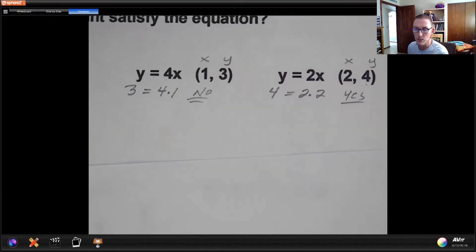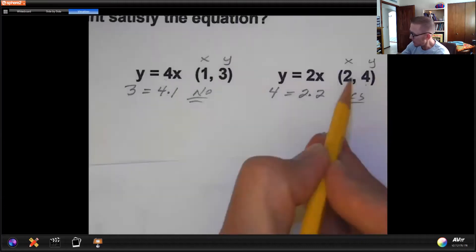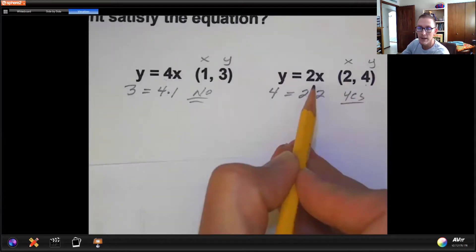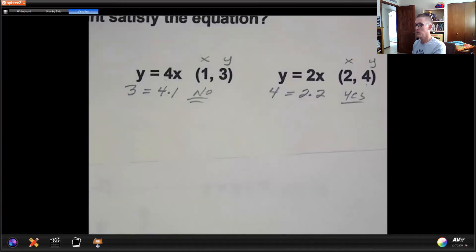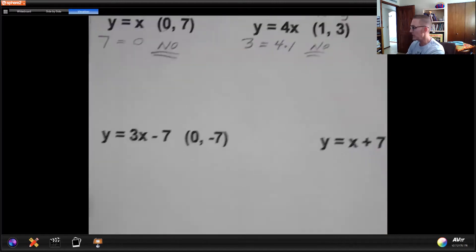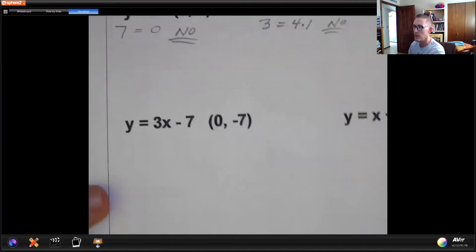So all you're simply going to do is take the x and the y value and plug in and then see if the math matches on both sides of the equals. So let's look at two harder examples here that are going to be slightly more complex because there's going to be a few more steps.